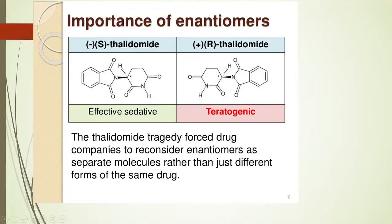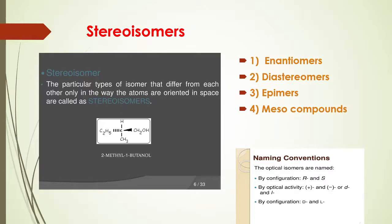So let us see what stereoisomers are. As you know, stereoisomers are isomers which have a different arrangement of atoms in space, and they are divided into very different types. As we studied stereoisomers in stereochemistry, I will just give an overview of what types of isomers we have studied. We have studied enantiomers, diastereomers, epimers, meso compounds, and so on.